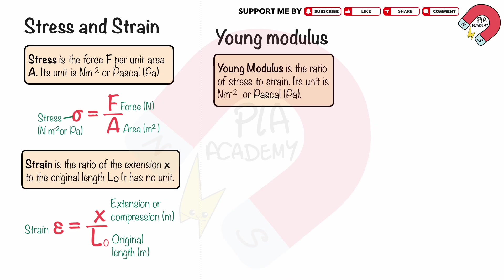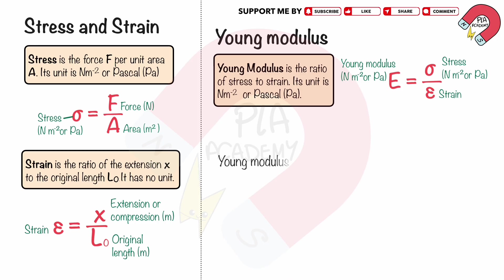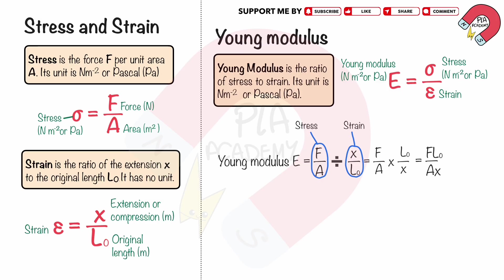Young's modulus is the ratio of stress to strain. Its unit is newtons per square meter or pascal. We can write the equation as E equals sigma divided by epsilon, where E is Young's modulus, sigma is the stress in pascals and epsilon is the strain which has no unit. So the Young's modulus E equals F over A divided by X over L0, where F over A is stress and X over L0 is strain. We can rearrange the equation as F·L0 divided by A·X.